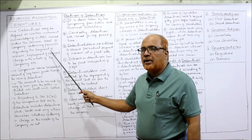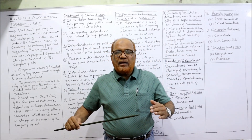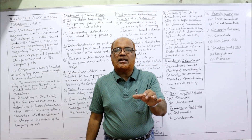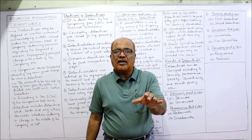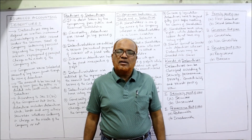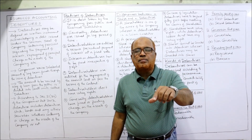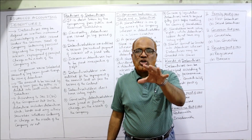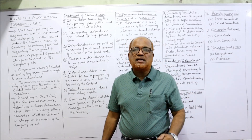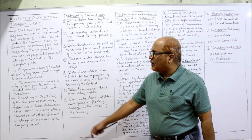Only companies can issue debentures, and that too under its common seal, containing the provisions regarding the payment of interest, repayment of principal, and charge on the assets of the company. The debentures contain the provisions regarding how much interest is to be paid, when the principal amount will be repaid, and what is the charge of debenture holders against the company.